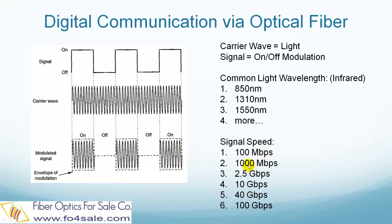The most common signal speeds include 100 megabit per second, 1 gigabit per second, 2.5 gigabit per second, 10 gigabit per second, 40 gigabit per second, and 100 gigabit per second. 100 gigabit per second is currently a state-of-the-art technology, and many fiber optic companies are working hard to commercialize it.